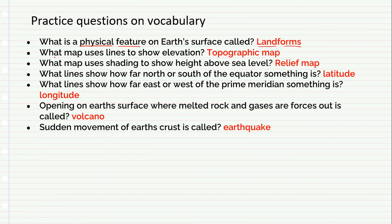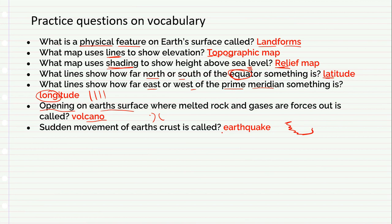Here are some questions you may see: What is a physical feature on the earth? A landform. What map uses lines? The topographic map. What map uses shading or color? The relief map. What lines show how far north or south from the equator? Latitude. What shows how far east or west from the prime meridian? Longitude. What is an opening in the earth's surface? A volcano. What is the sudden shaking of the earth? An earthquake.